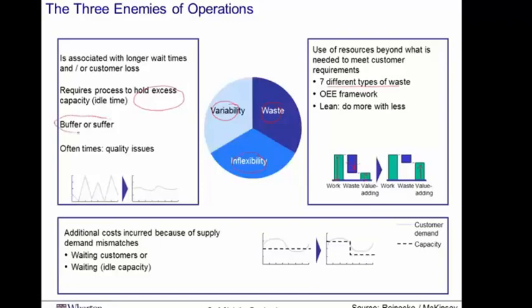Oftentimes, variability also reflects poor quality, and so whenever you see variability, we have a problem in operations — we saw this in our discussion of Six Sigma. And finally, there's inflexibility. Matching supply with demand is always hard. We either have patients waiting for doctors, or doctors waiting for patients. The more we can do to adjust supply to demand, the better an operation we're going to run.